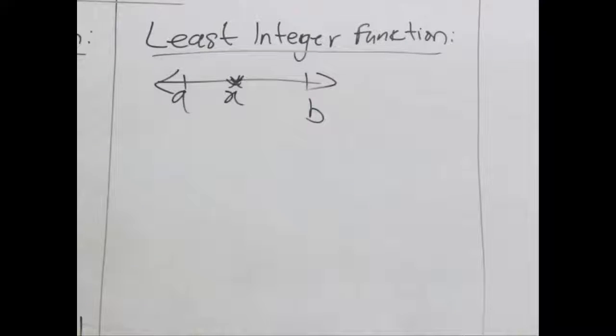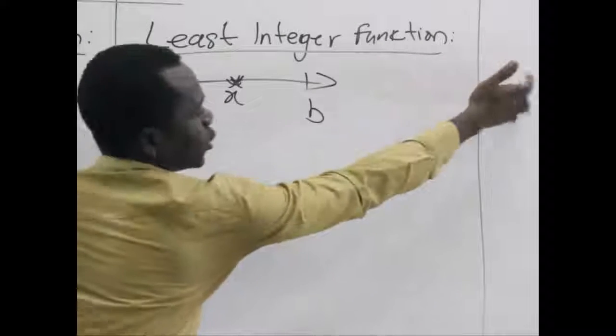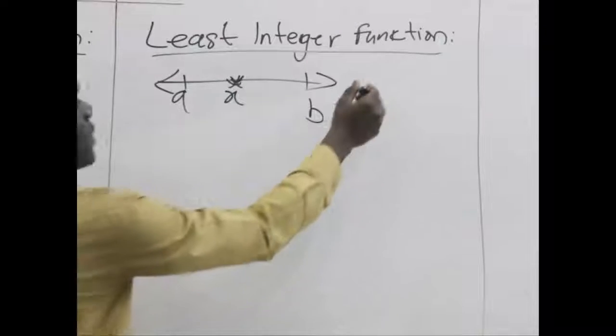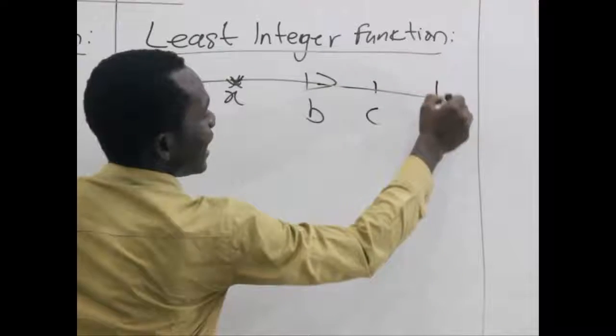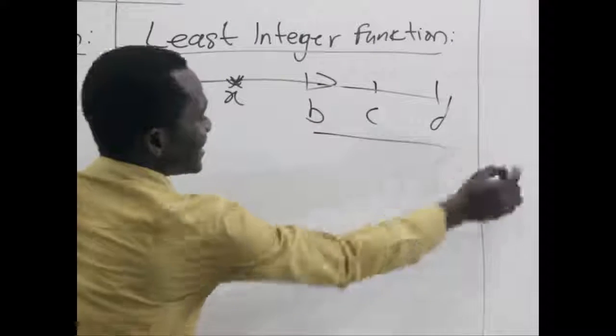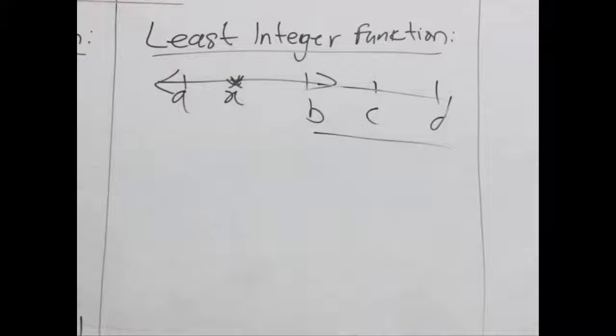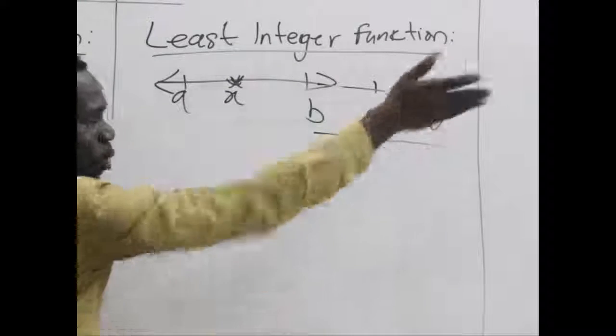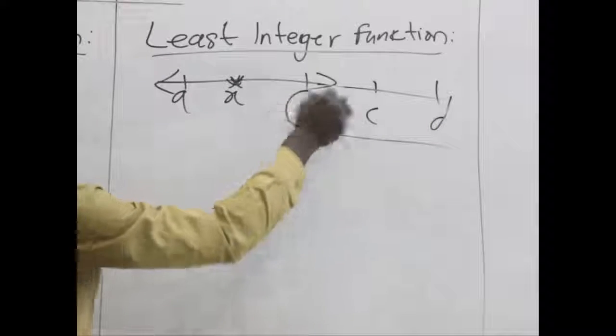But we want the least number that is greater than x. Here, we know that we can get other numbers that are also greater than x. Let's say, we have c here, we have b here. But all these numbers are greater than x. But which one is the smallest among them? No doubt, it is b.